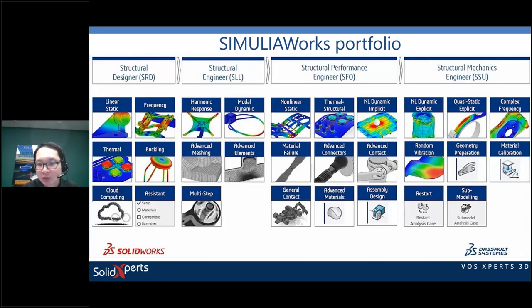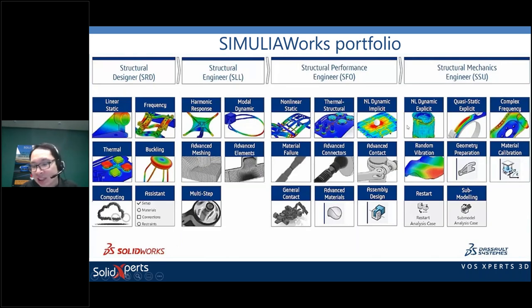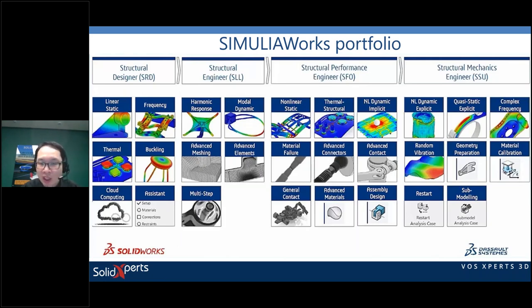The Structural Performance Engineer role — like the example I showed today — covers non-linear static analysis with large deformations, non-linear materials, and advanced connectors. There's also a non-linear dynamic analysis using an implicit solver. The Structural Mechanics Engineer role adds non-linear dynamic explicit solving, which is much more powerful for complex analyses like can crush.